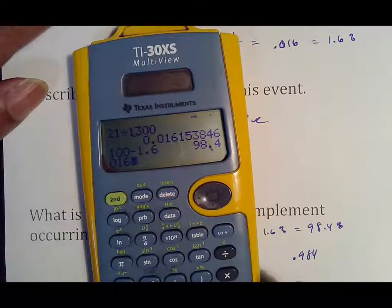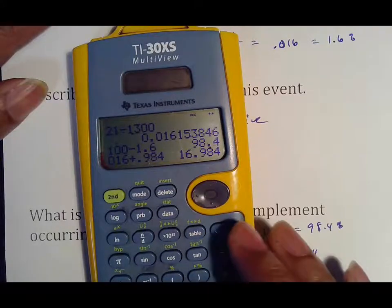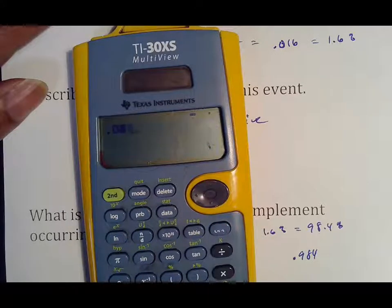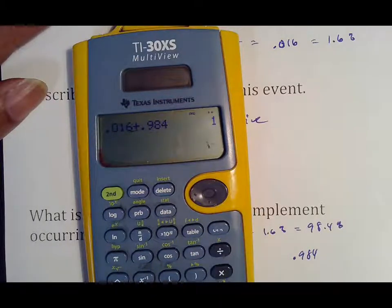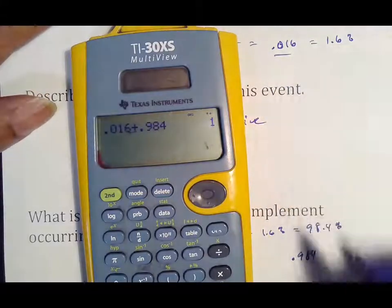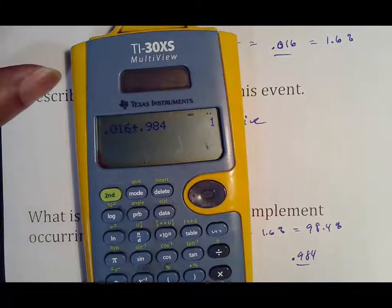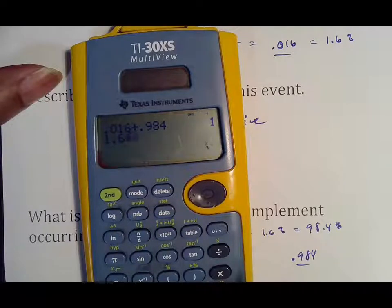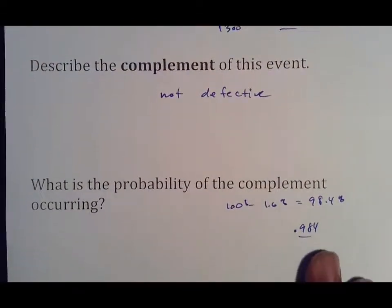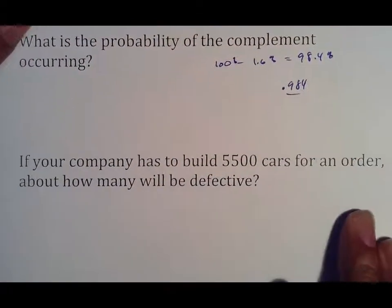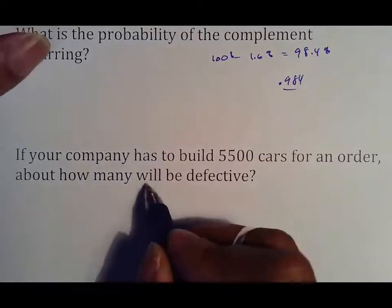Remember I said probability of one is everything. And so when I take this probability plus that probability, it should add up to one because that covers everything. Or 1.6 percent plus 98.4 percent gives me 100 percent. However you view it, that's how the complement works. So if your company has to build 5500 cars for an order, how many will be defective?